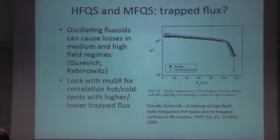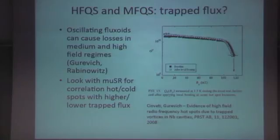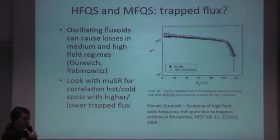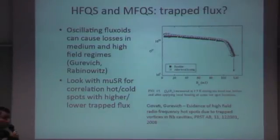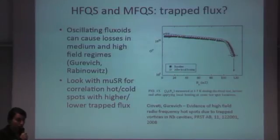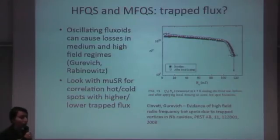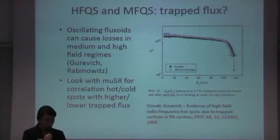Another thing to check is the role of trapped flux on high-field Q-slope and medium-field Q-slope. There is work from Alex and Gigi — a paper on evidence of radio-frequency hotspots due to trapped vortices — showing that oscillating fluxoids can cause losses in the medium and high field regimes. Can we verify this with µSR? Yes, because µSR allows zero-field measurements. We will take hot spots and cold spots and look for a correlation with higher or lower trapped flux, or higher or lower capability of trapping flux.